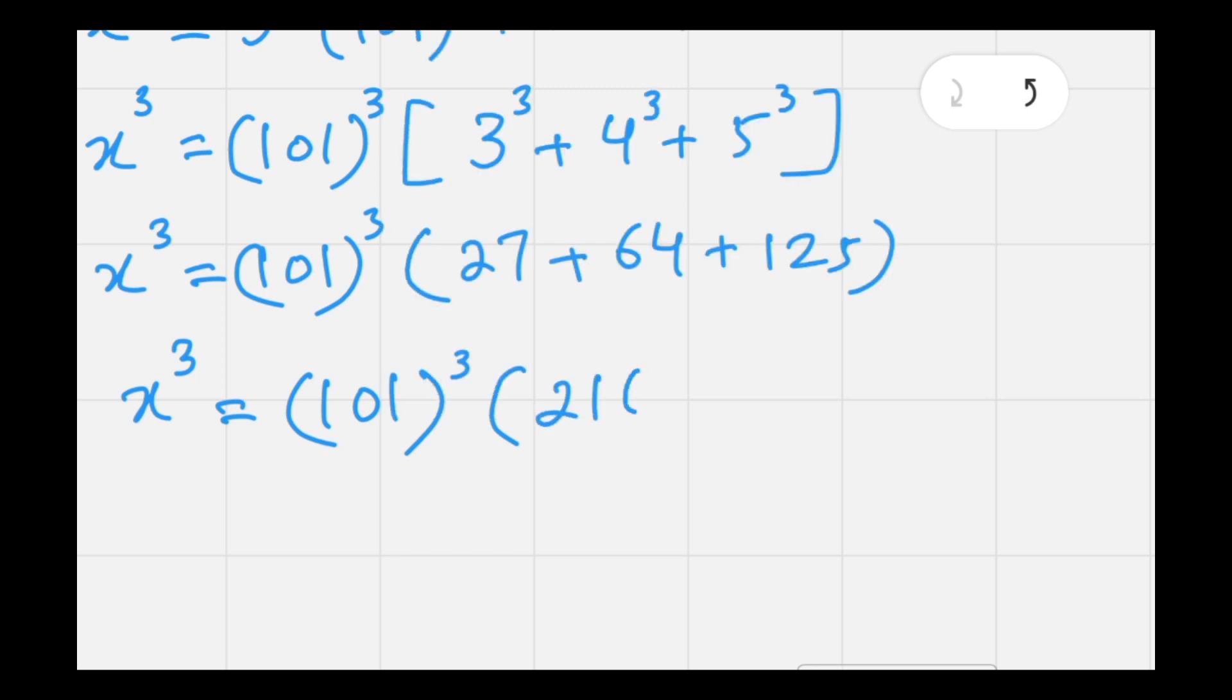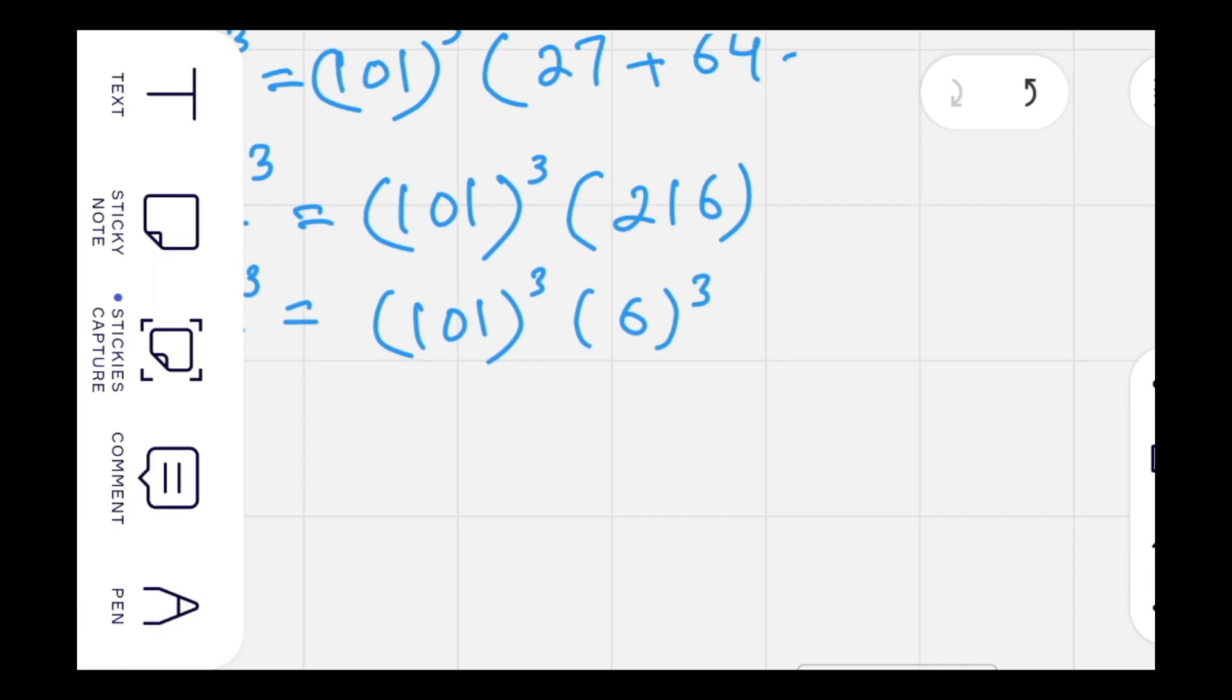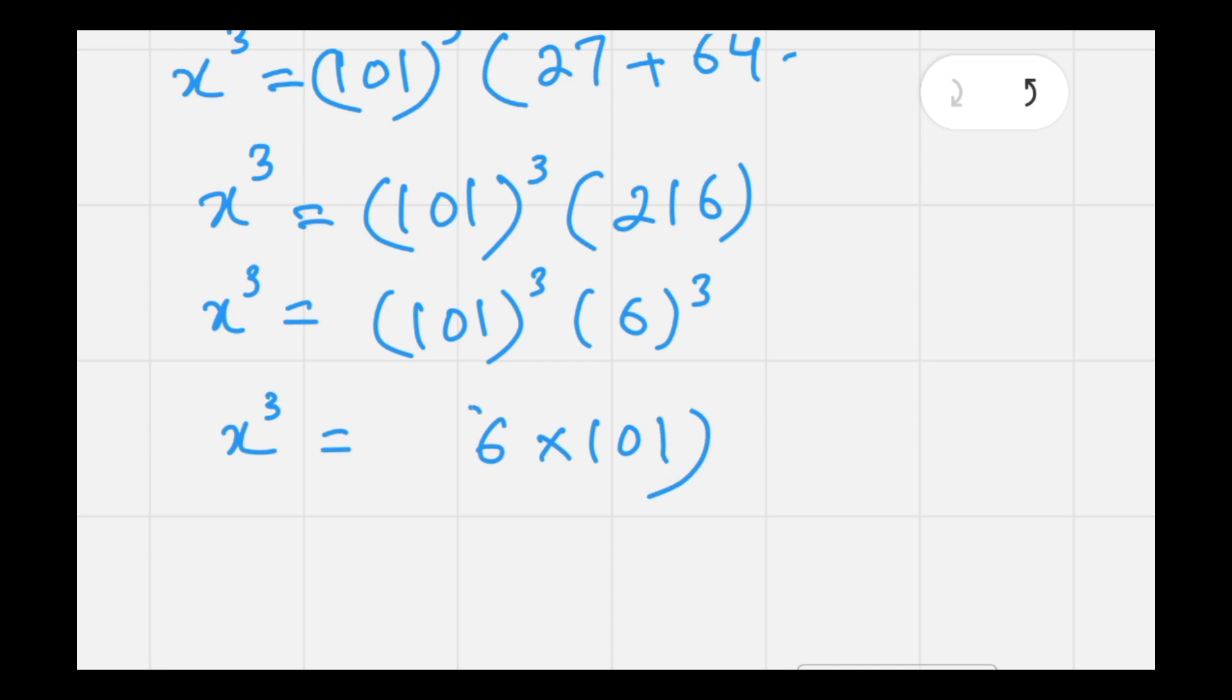Writing it in terms of cube, we will write as 101 cubed times 6 cubed. Again applying the exponent law, we will get x cubed equals 6 times 101 cubed, so we can get its cube root easily.